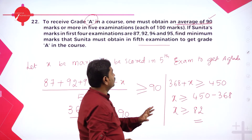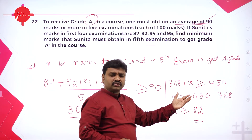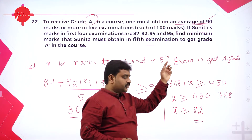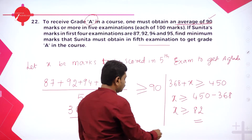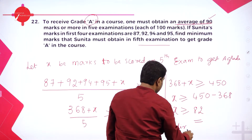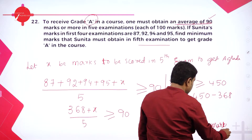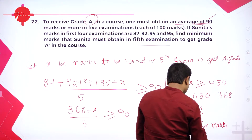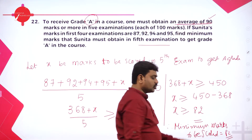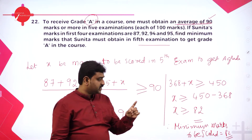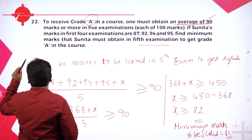If Sunita scores minimum 82 marks, she'll get A grade. More than 82 also she'll get A grade. So minimum she should score 82 marks in the fifth exam. Therefore, minimum marks to be scored is equal to 82. Reading the question and framing the inequality is most important.